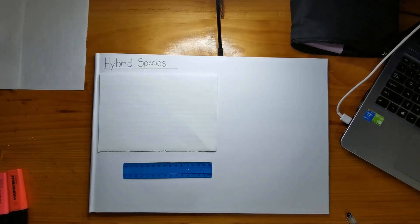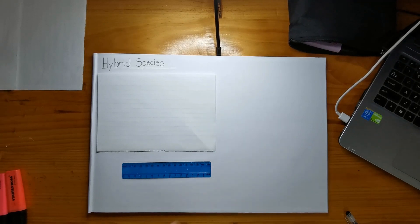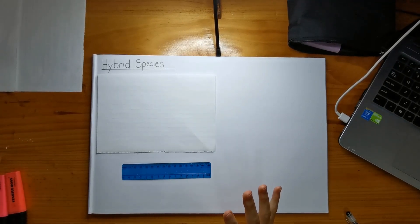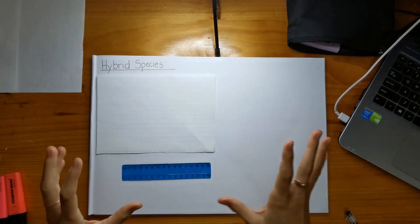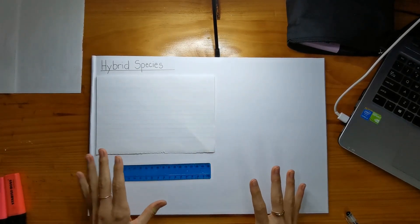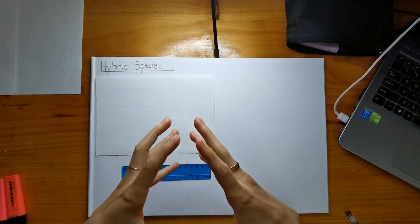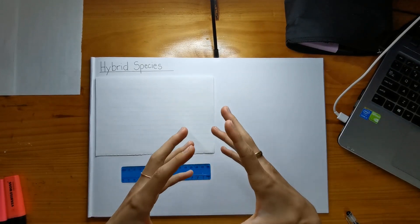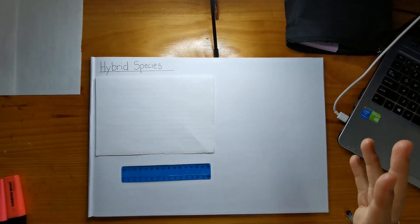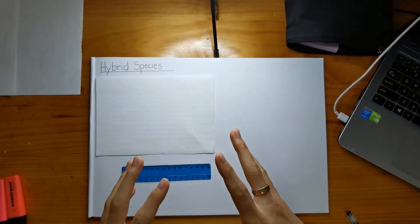But before we do that, I actually just want to explain how bivalents come into play with this, and how kind of polyploid species work. So what they do with hybrid species is that there's always two species that they kind of mush together to form this hybrid. But sometimes the chromosome numbers are odd, or sometimes they have multiple sets of genomes.